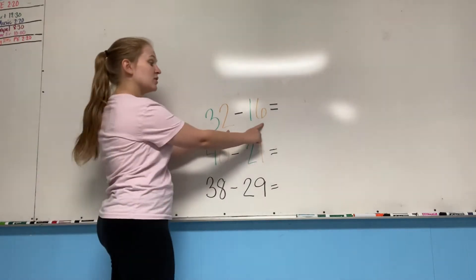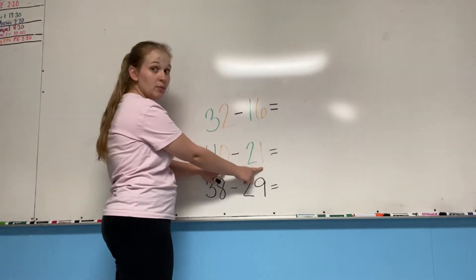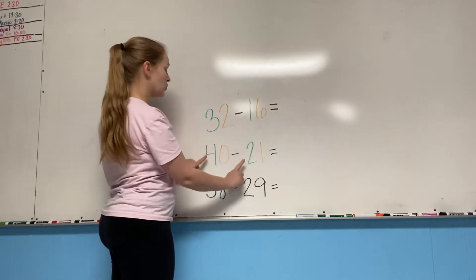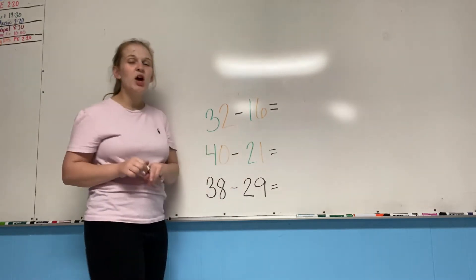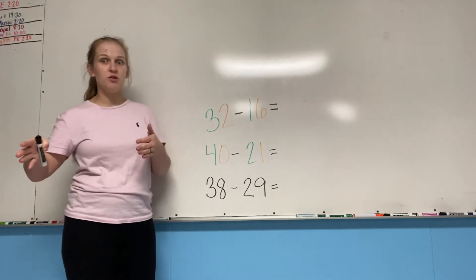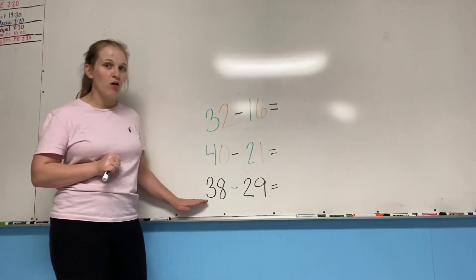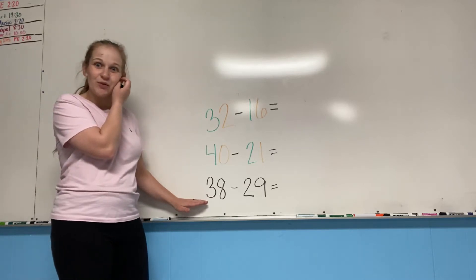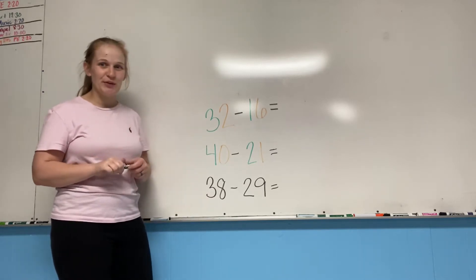I've made the ones places orange in these first two problems, and I've made the tens places green in these first two problems. So we can kind of remember what numbers we're working with and what numbers we're allowed to borrow from. And then the bottom one, I made all one color to see if we can kind of remember what we're supposed to be doing.